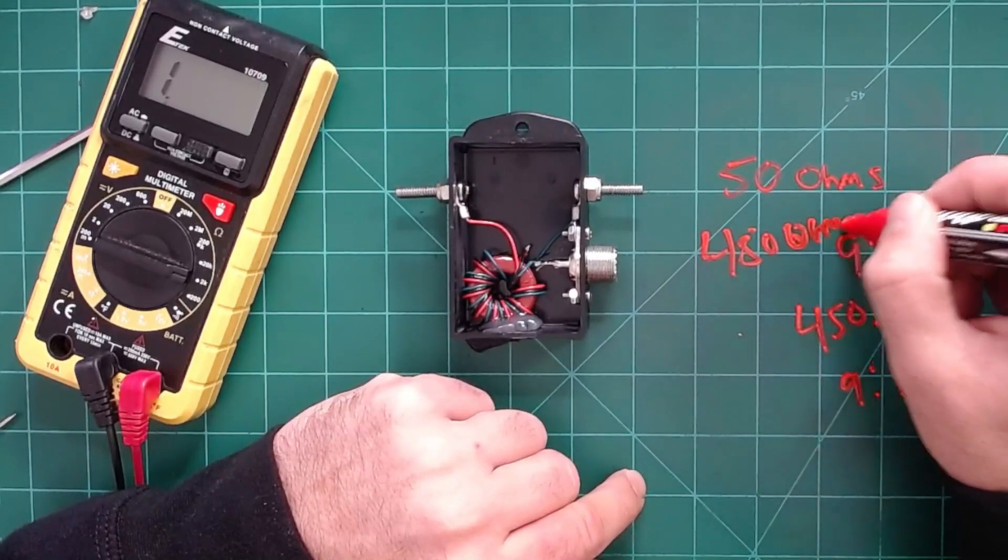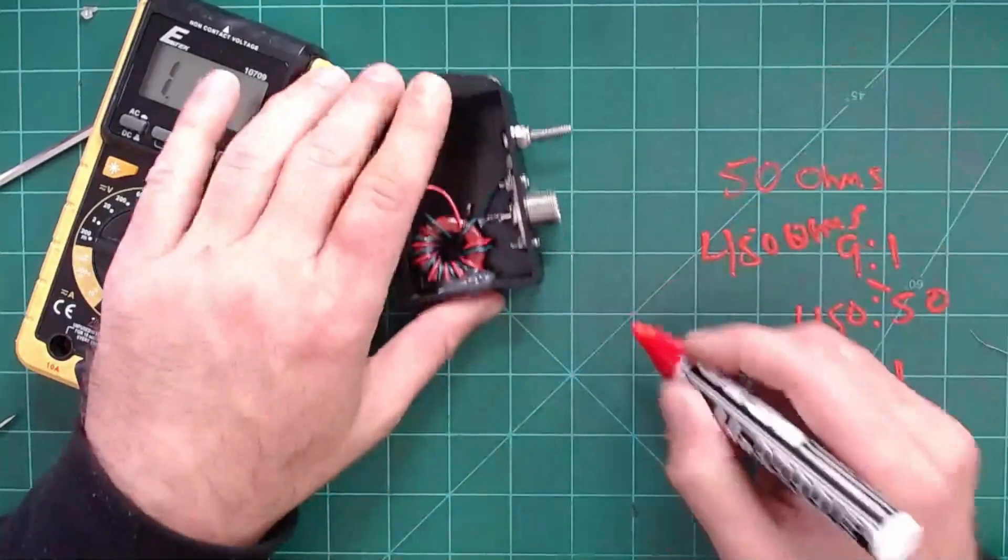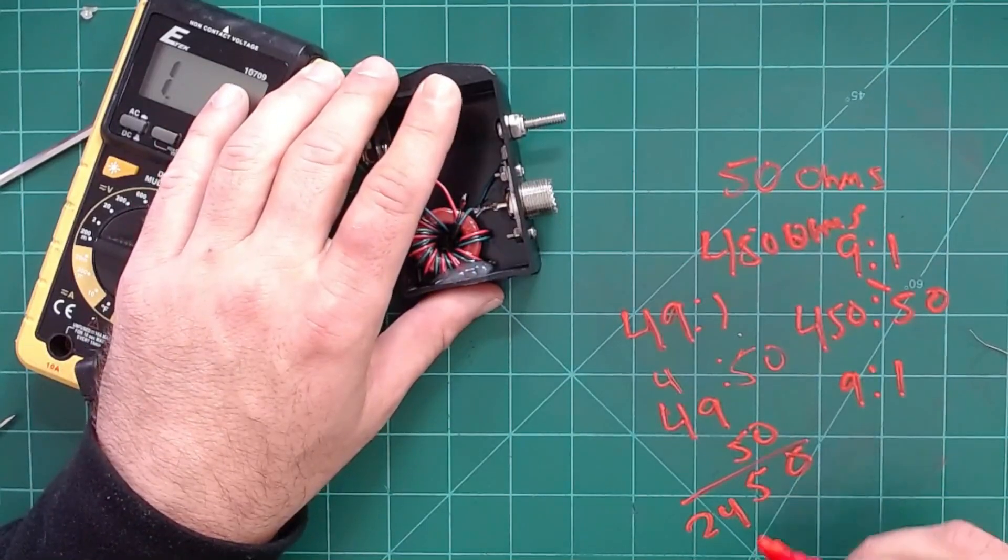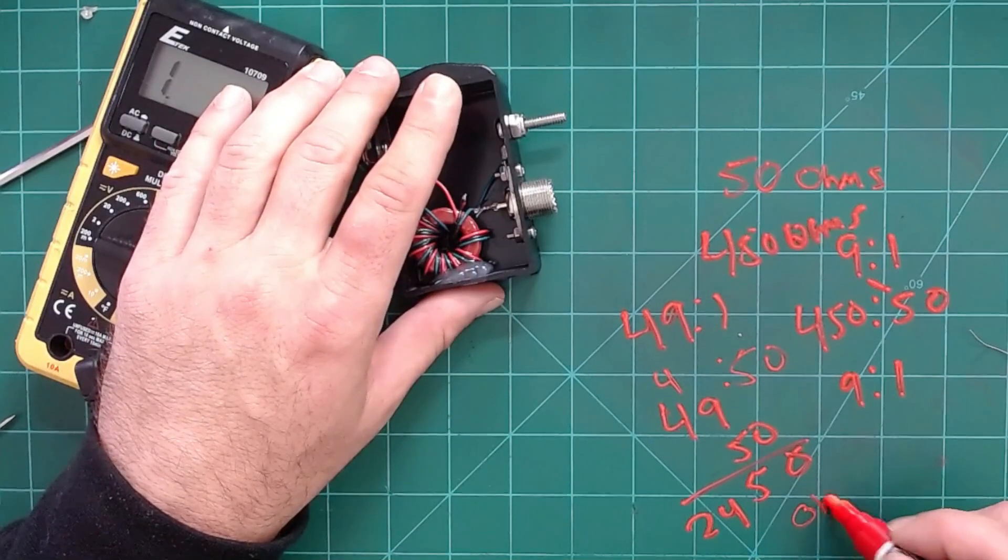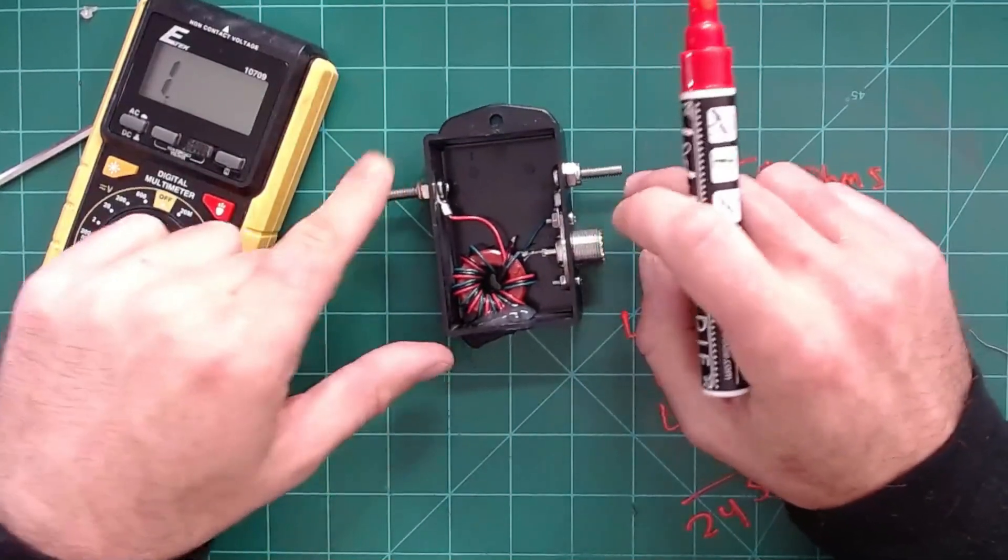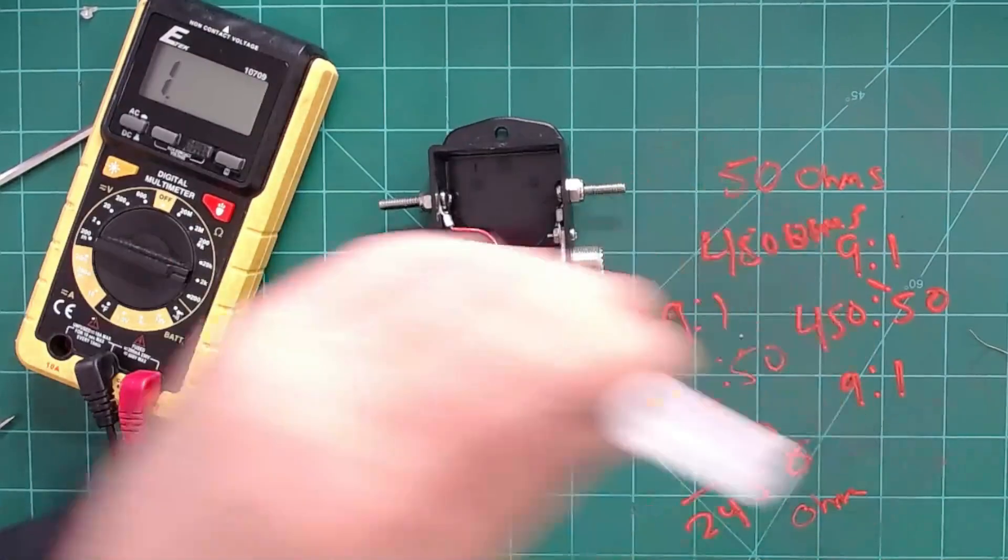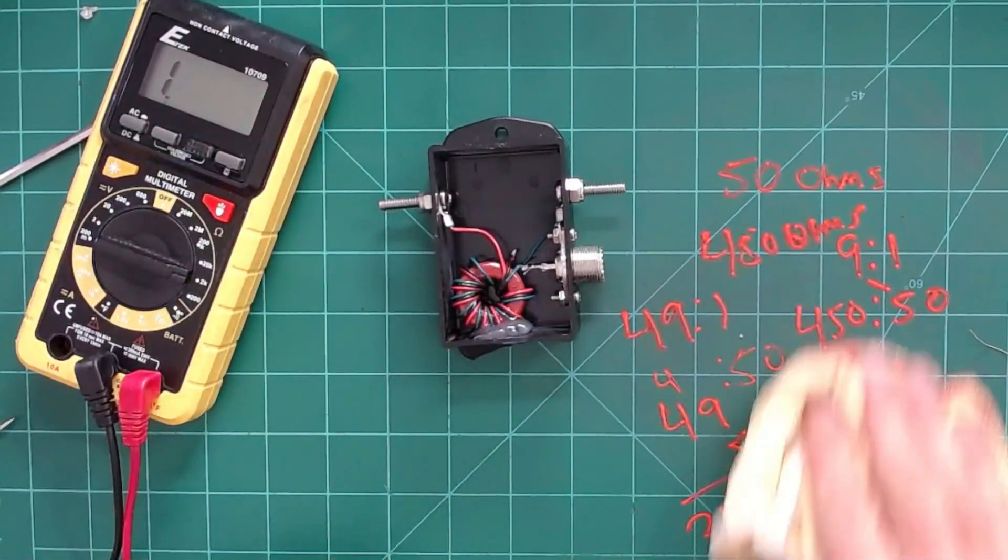The same logic would apply with like a 49 to 1 - you would want 2450 ohms worth of resistors. All we're going to do is jump them in between this post and this post, or your antenna post and what could be your counterpoise post. So let's go ahead - since this is a 9 to 1, we're going to get 450 ohms worth of resistors in line here.